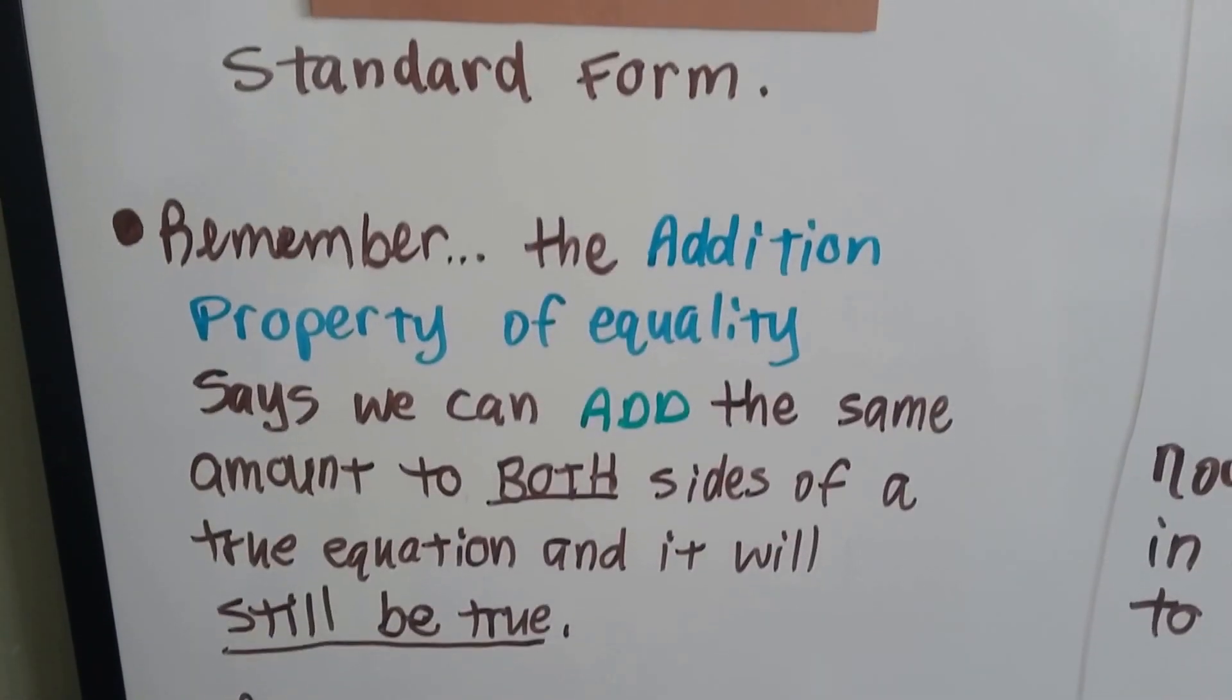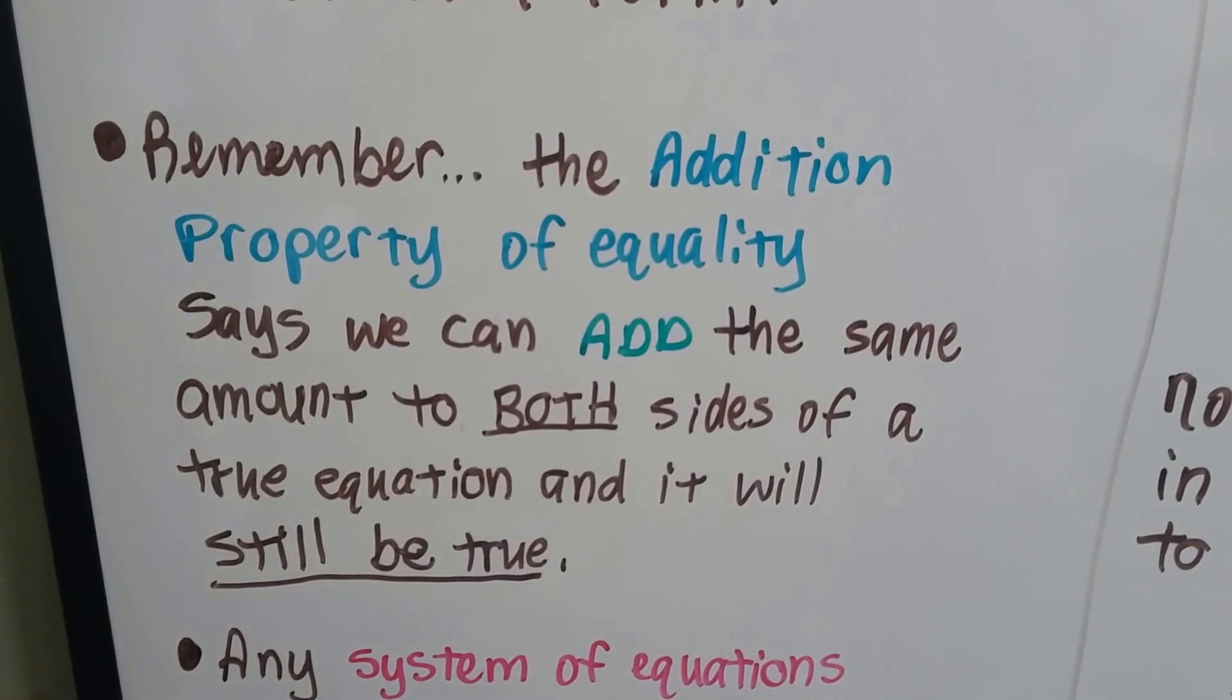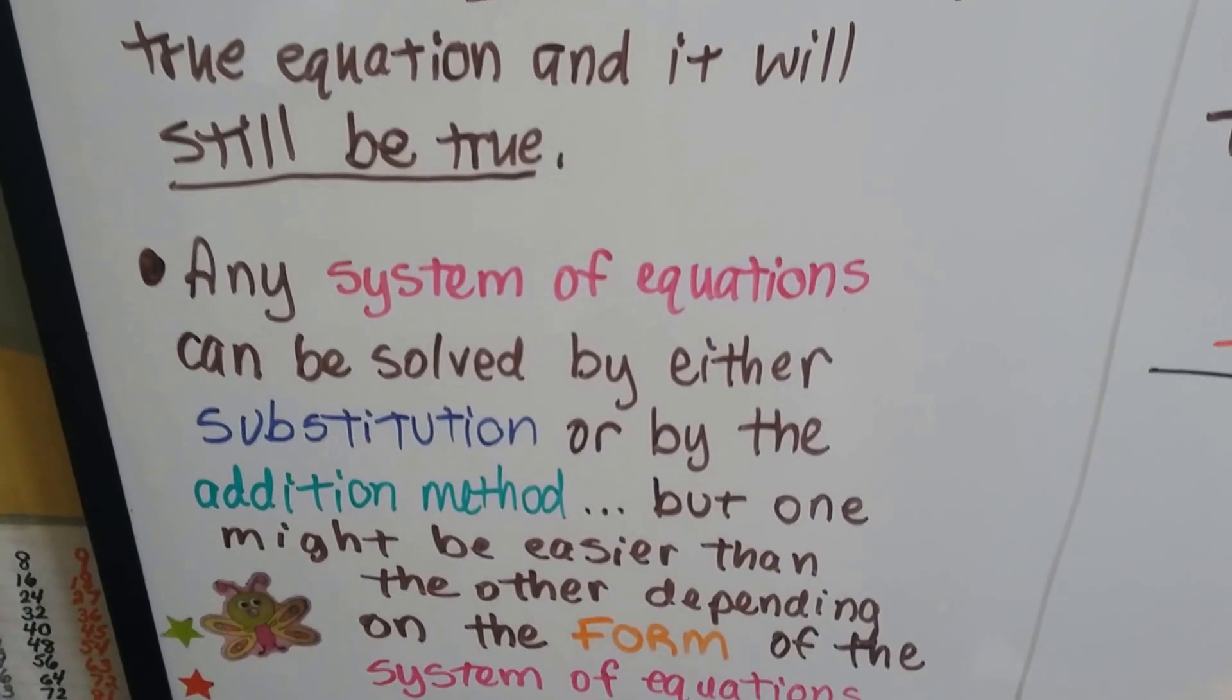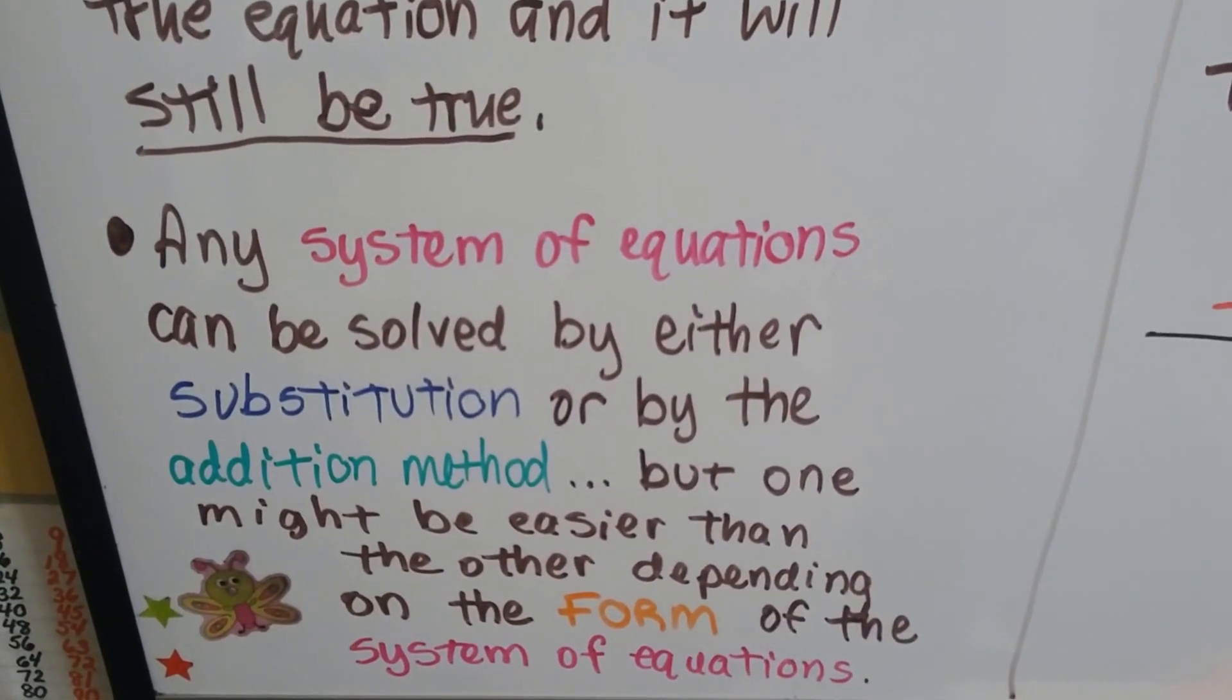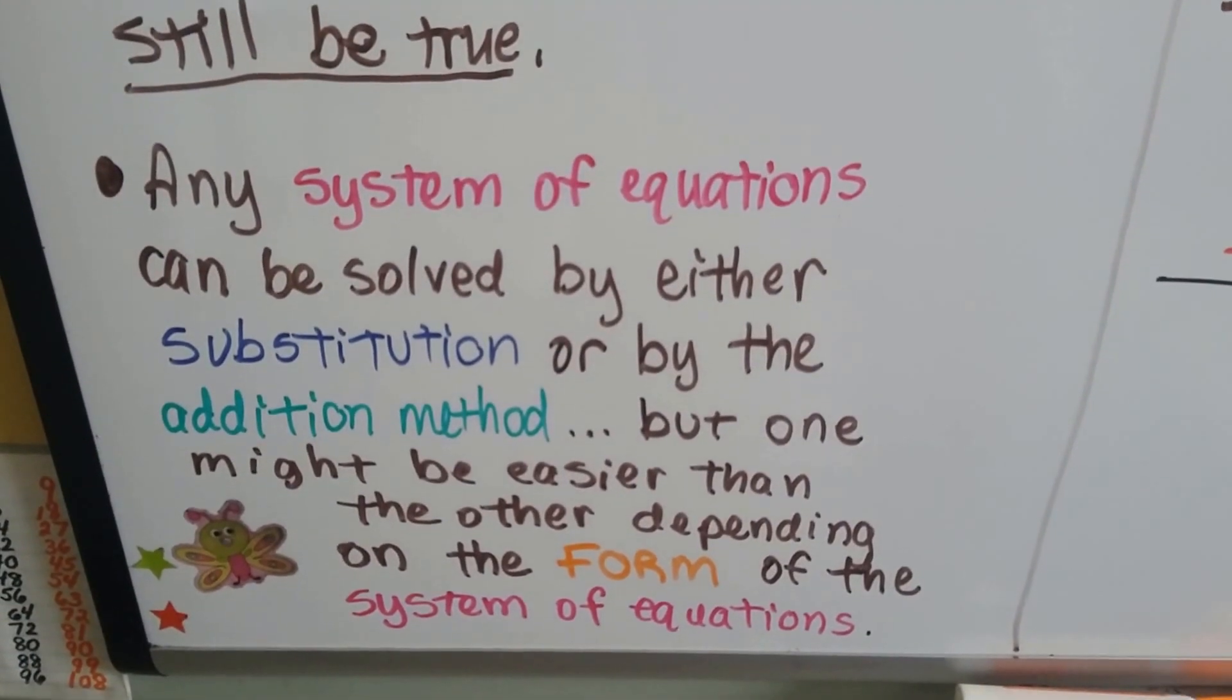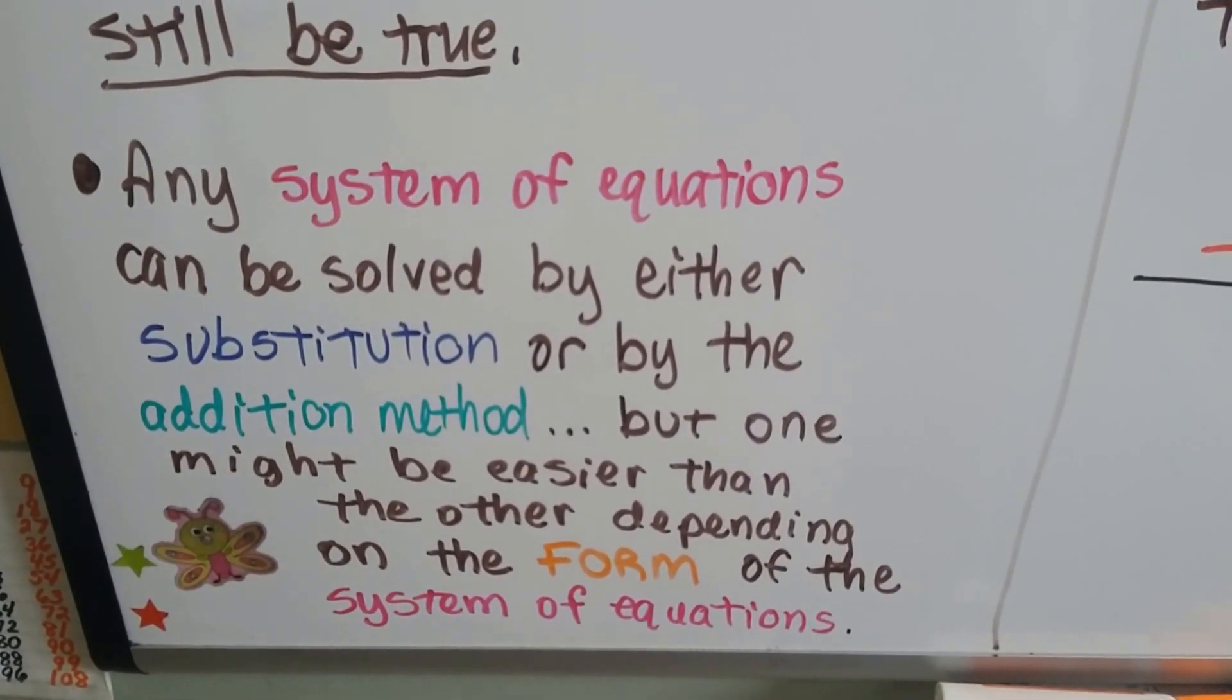We have to remember, the addition property of equality says that we can add the same amount to both sides of a true equation and it'll still be true. Any system of equations can be solved by either using substitution or this addition method, but one might be easier than the other, and it depends on the form of the equation.